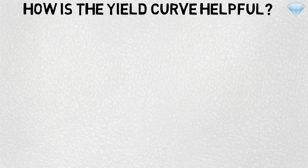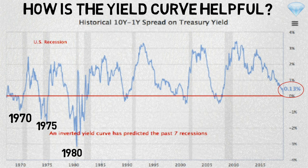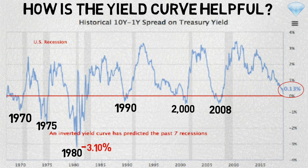How is the yield curve helpful? An economic recession occurs when the spread between the 10-year yield and 1-year yield drops below zero. Looking at the historical spread chart, the current spread between the 10-year yield and 1-year yield is 0.13%. Economic recessions have generally followed once the yield spread drops below 0%. This was an indication for every single recession in the 1970s, 1975, the 1980s, the 1990s, 2000, and the most recent one in 2008. Especially in the 1980s, the yield spread reached an all-time low of minus 3.10%. An inverted yield curve has historically predicted the past 7 economic recessions.